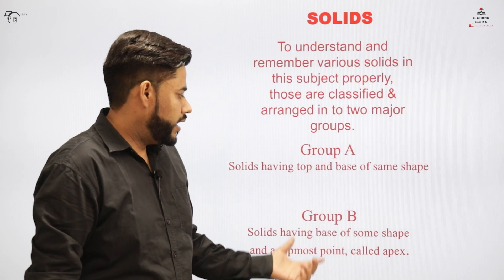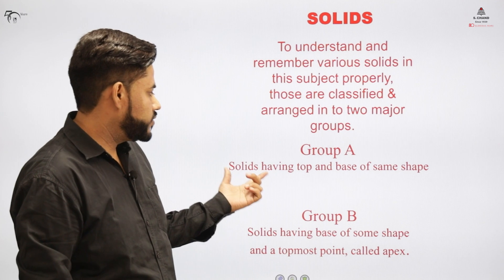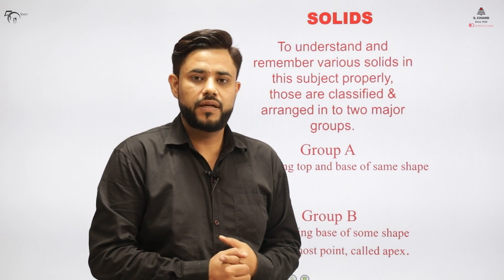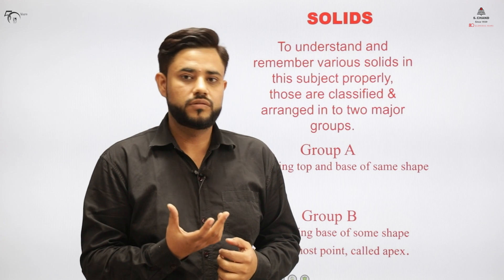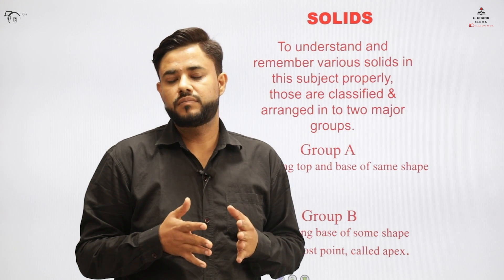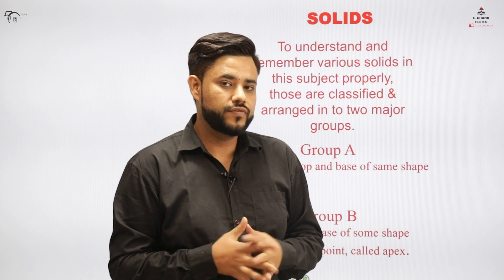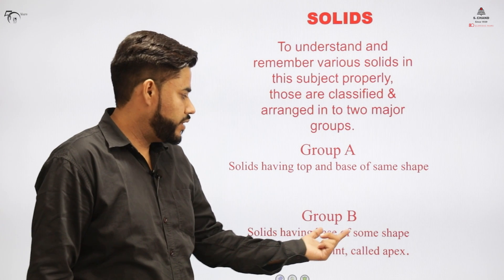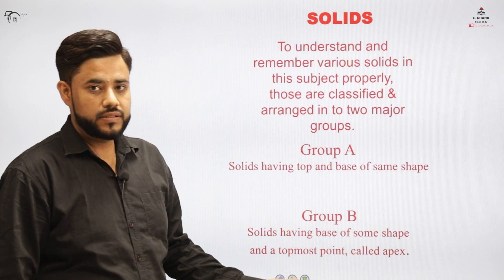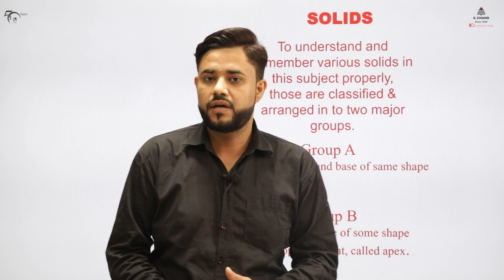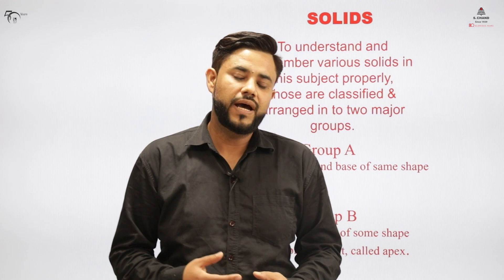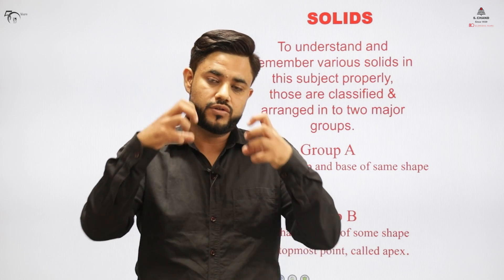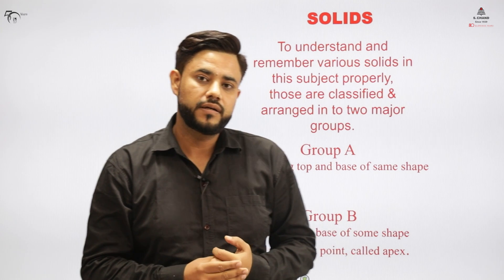Category A and Category B. Category A consists of a solid which has the top and the base of the same shape. For example, a cylinder has a circular base and the top is also circular. When we join both the base and the top together, we get a solid of Category A. Category B consists of a solid that has a base of some shape, and the top is generally a point. For example, a cone has a circular base, and if we connect all the points of the circle to the topmost point, we get a cone.